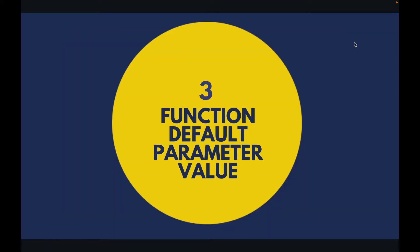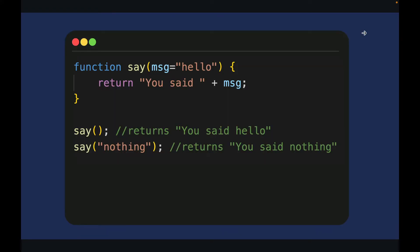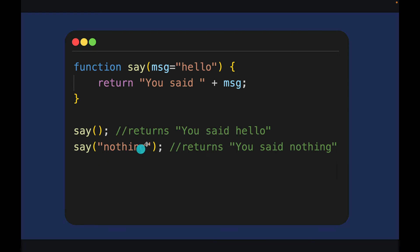Function default parameter values. We can define functions in JavaScript having default values for the parameters. So in this save function I have a message parameter where I have defined the default value of 'hello'. I can call this save function without an argument and it's going to return 'you said hello', picking the default value. Or I can call it passing some value like 'nothing' and it's going to return 'you said nothing'.